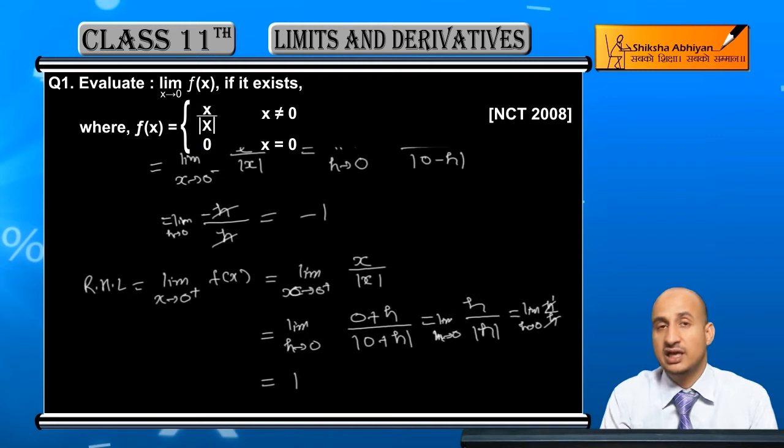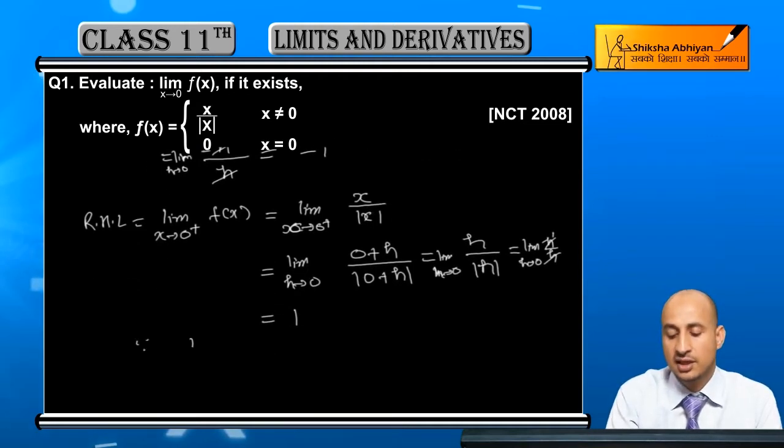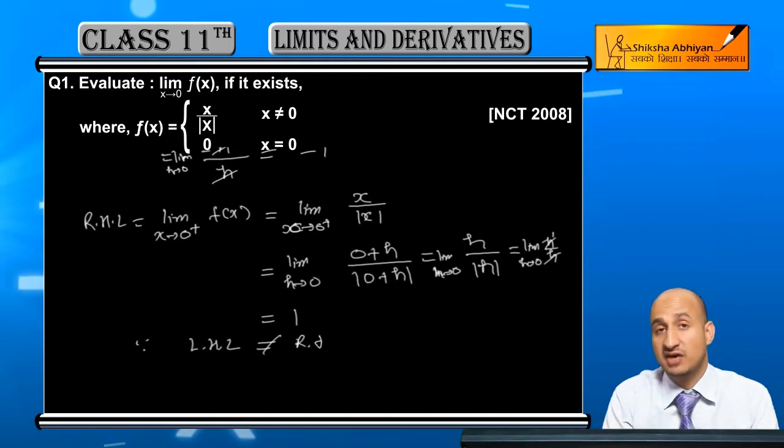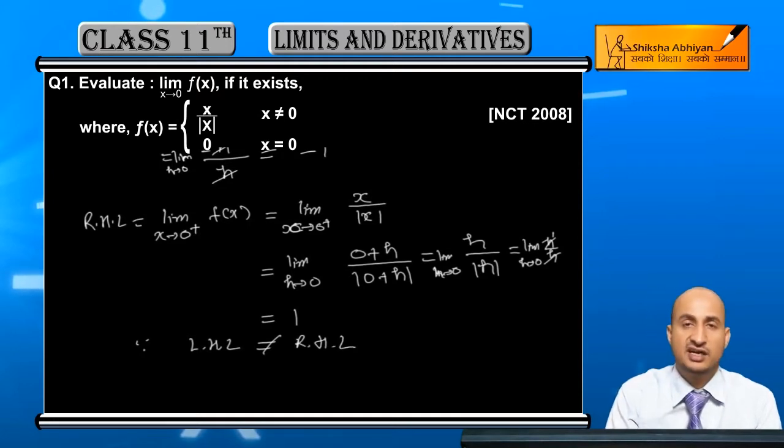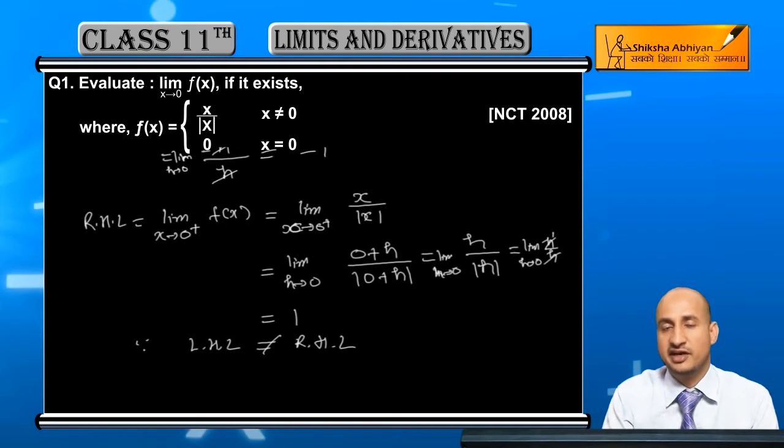So the right hand limit is 1. Since left hand limit is not equal to right hand limit (left hand limit is -1 and right hand limit is 1), the limits do not match.